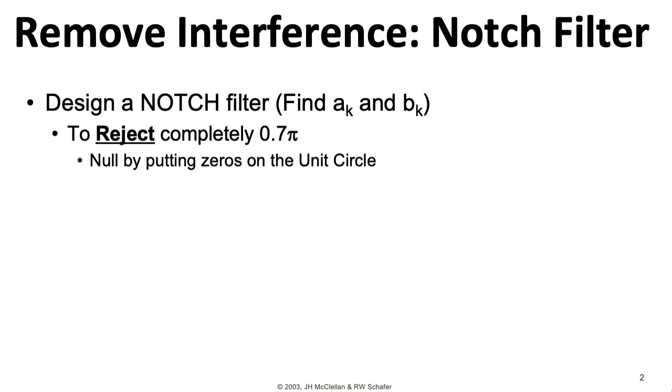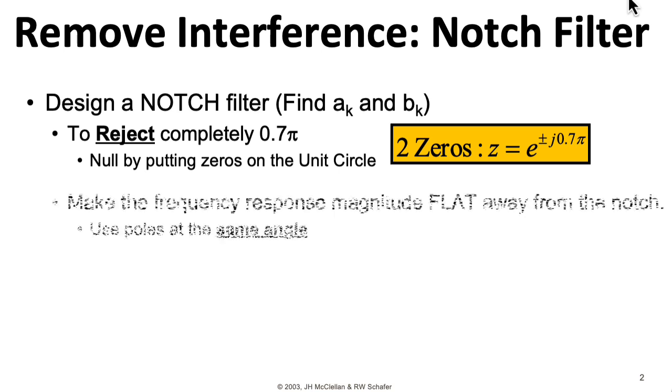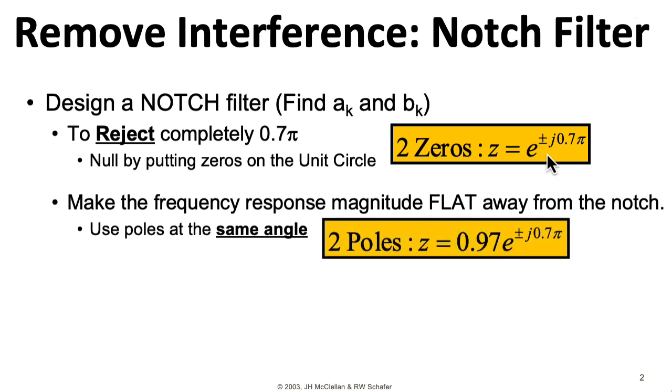Suppose we want to completely eliminate the digital frequency of 0.7π. We can place zeros at angles of plus minus 0.7π on the unit circle. The game we're going to play is to place a couple of poles at the same angles, but pulled towards the origin a bit. Of course, for the filter to be stable, we need the poles inside the unit circle.